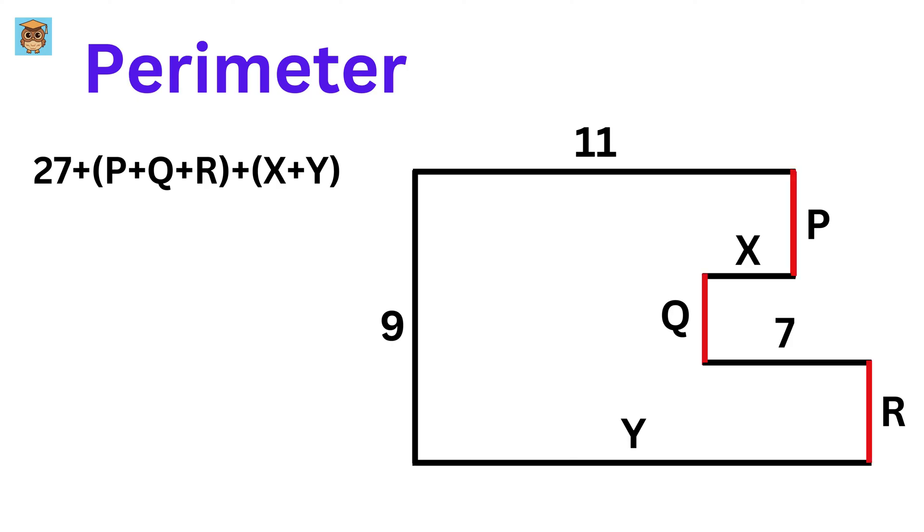Now, look at all these vertical sides. We can clearly notice that these three sides together make up this vertical side, and therefore, we get P plus Q plus R equals 9. So, put it here. Therefore, the perimeter becomes 36 plus X plus Y.